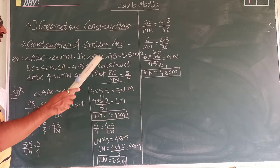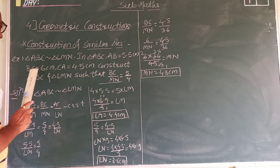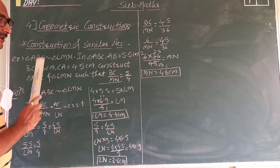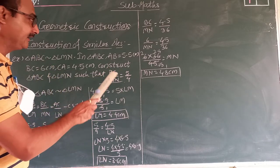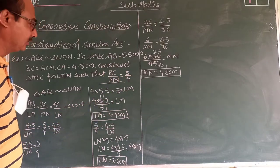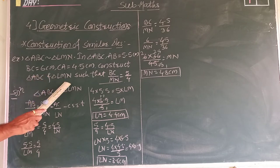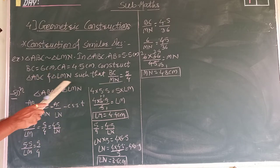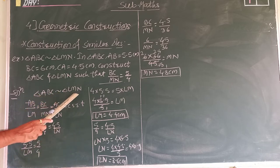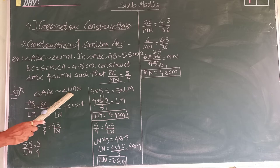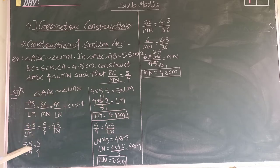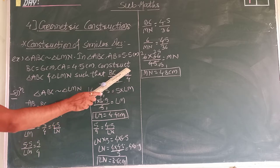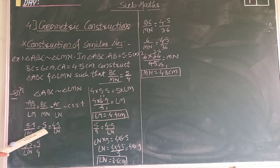In triangle ABC, the sides AB, BC, and CA are given. You have to construct both triangle ABC and triangle LML such that BC upon ML equals 5 upon 4. First, you need to find the sides of triangle LML. Since these two triangles are similar, we can take the ratio of corresponding sides: AB upon LM equals BC upon ML equals AC upon LM. The ratio BC upon ML is given directly as 5 upon 4.